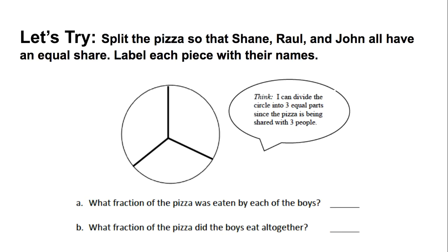All right let's move on to question three. It says split the pizza so that Shane, Raul and John all have an equal share. Label each piece with their names. Well this is kind of simple because they did divide the circle for you, right? They split that fake pizza up already. So our job now that we see that these parts are all equal is to label one piece for Shane, one for Raul and one for John. Nice. Each piece of pizza is the same size. All friends are happy.